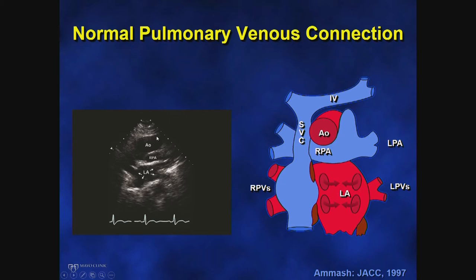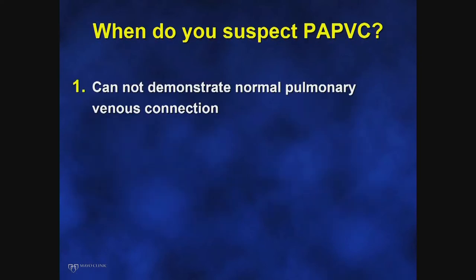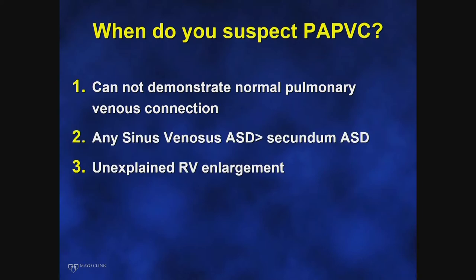You can see normal pulmonary venous connections on echocardiography from the suprasternal notch with the crab view — showing the right pulmonary artery, the aorta, and the left atrium with the different veins emptying — and also on CT scan and MRI. Another reason to suspect partial anomalous pulmonary venous connection is the presence of an atrial septal defect, especially a sinus venosus defect, where more than 80% of these defects are associated with anomalous pulmonary venous connection of the right upper lung, and less so with a secundum defect.